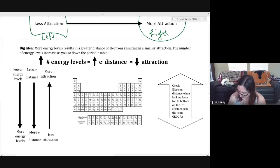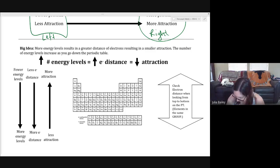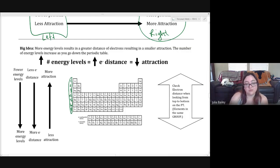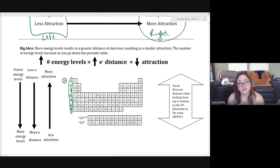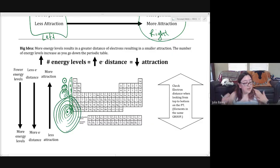When looking vertically in groups, more energy levels result in a greater distance of electrons from the nucleus, which gives a smaller attraction. The number of energy levels increases as you go down the periodic table. The periods are numbered one through seven, and those numbers tell you the number of energy levels — the number of rings outside the nucleus containing electrons. Period one has one energy level, period two has two rings, and by period seven there are seven energy levels around the nucleus, making the atoms much larger.